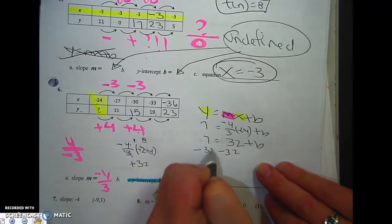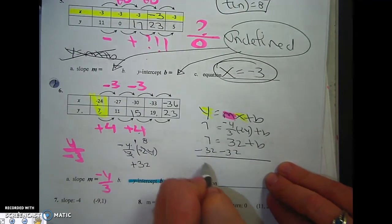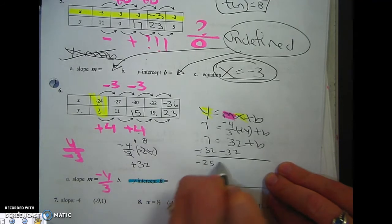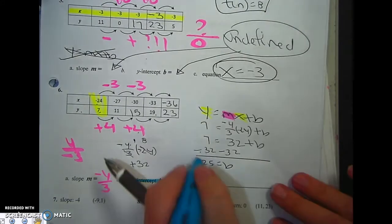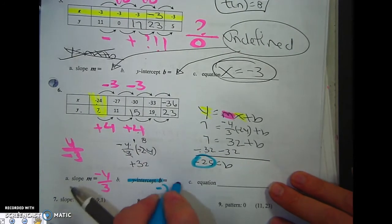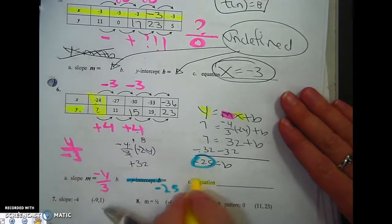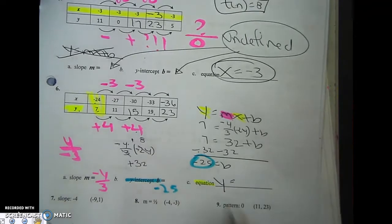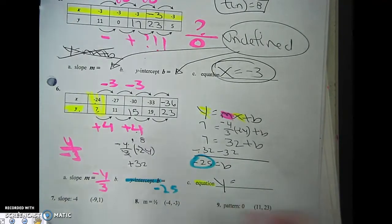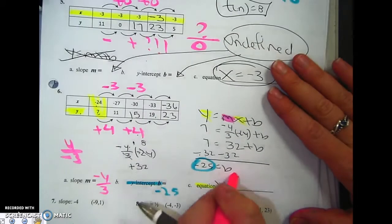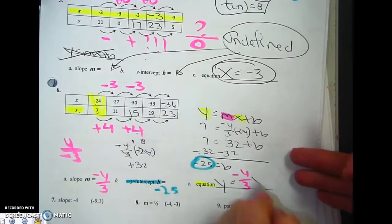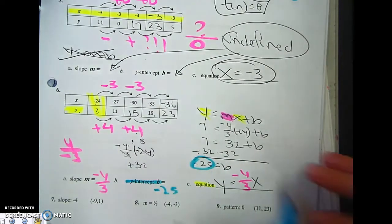This is positive. The opposite is negative. 32 minus 7 is 25. Bigger guy wins. I just got my b. Boom. Negative 25. Therefore, my equation, y equals negative 4 thirds x minus 25. Okay. All right.